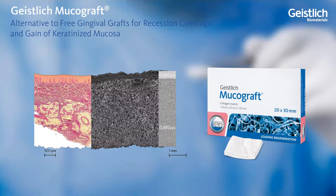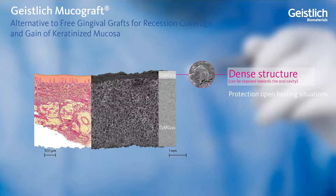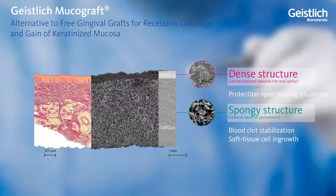Utilized successfully in recession coverage defects and in vestibular plasty procedures where a gain of keratinized tissue is desired, Geislik MukherGraft, with its unique bilayer structure, mimics the epithelial and connective tissue layers of a free gingival graft, allowing it to be exposed in the oral cavity for open healing. Its dense outer structure serves a protective barrier function, while the spongy inner layer stabilizes the blood clot and creates an environment for soft tissue ingrowth and proliferation.